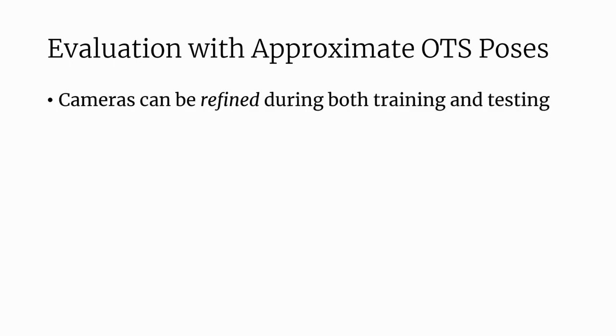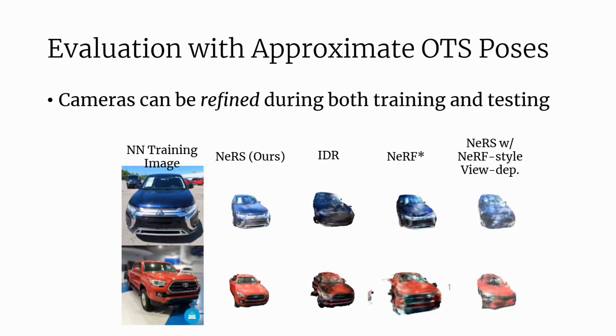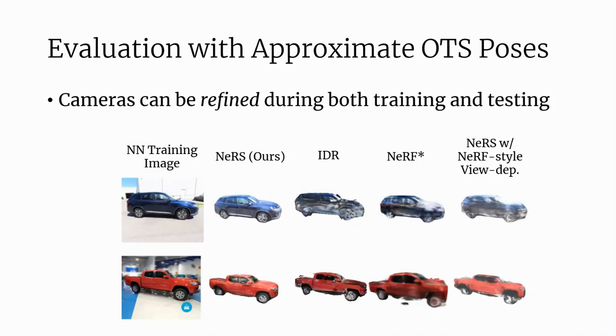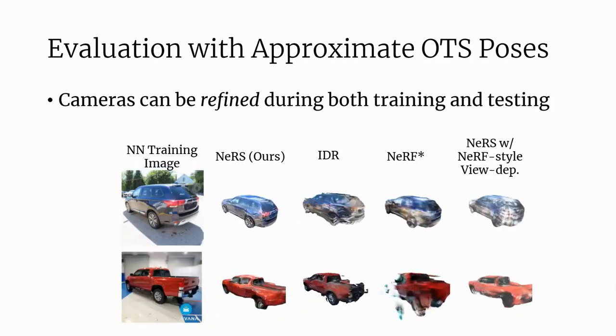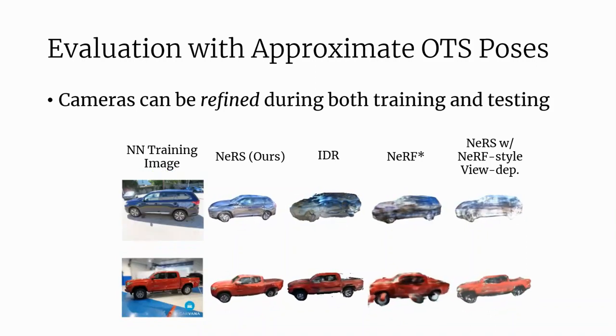Acquiring pseudo-ground truth cameras is costly. Thus, we also propose a more realistic evaluation for in-the-wild view synthesis. To account for approximate camera poses, each approach can refine the camera initializations during both training and testing. Here, we visualize each approach after being trained with approximate camera initializations. We find that NeRFS generalizes best in this unconstrained but more realistic setup.